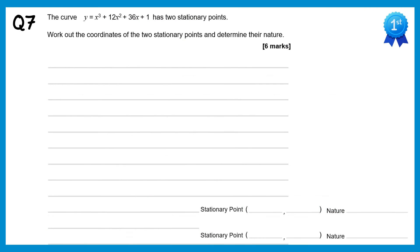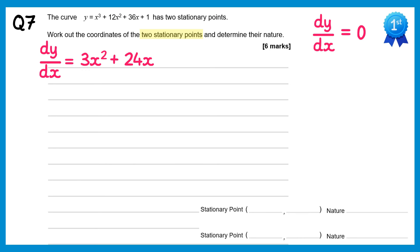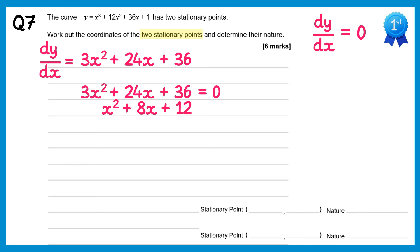For this final question we need to find the coordinates of two stationary points. Setting dy/dx equal to 0: differentiating x³ + 12x² + 36x + 1 gives 3x² + 24x + 36 = 0. Dividing by 3: x² + 8x + 12 = 0. Factorising gives (x + 6)(x + 2) = 0, so x equals negative 6 and x equals negative 2.